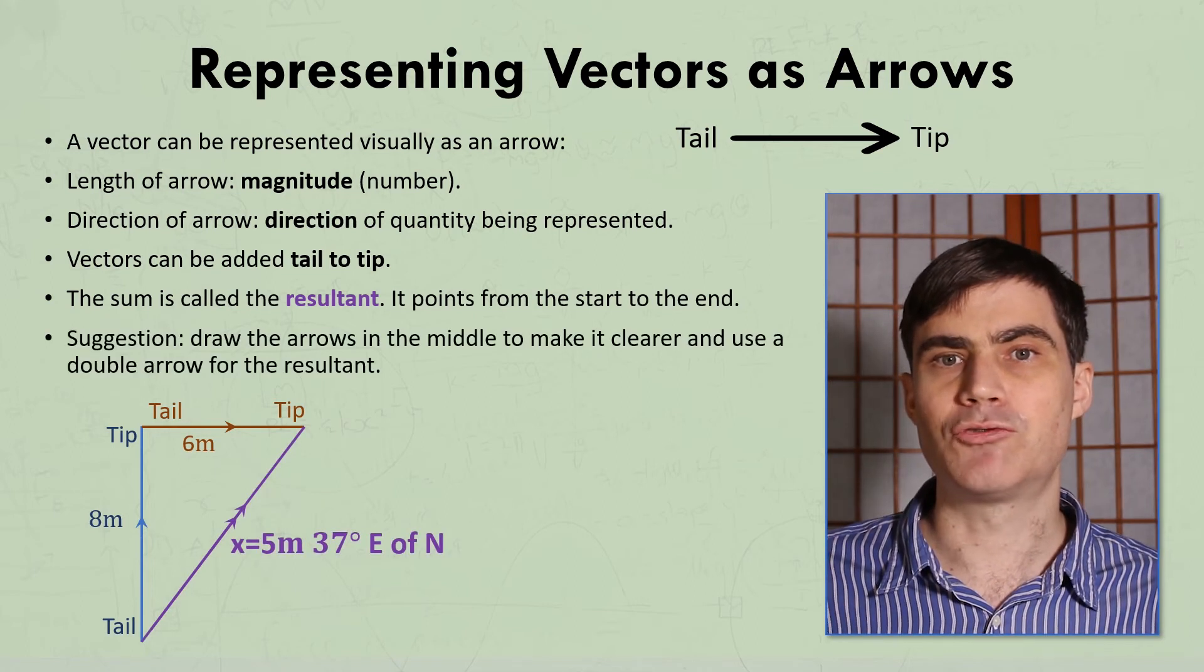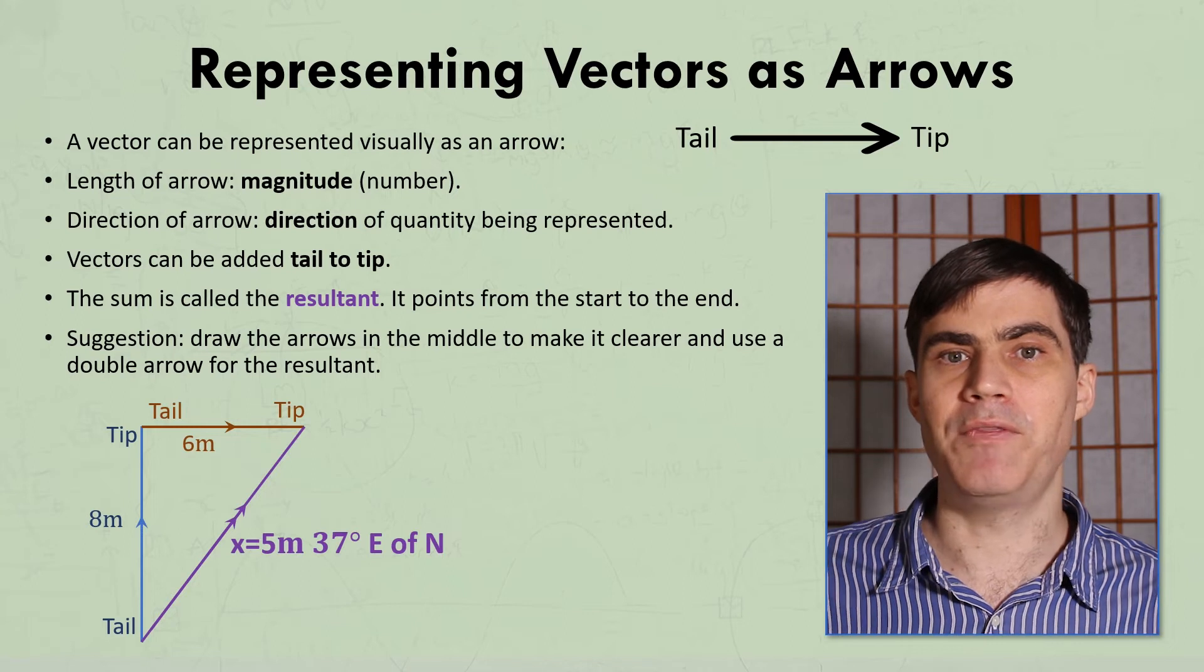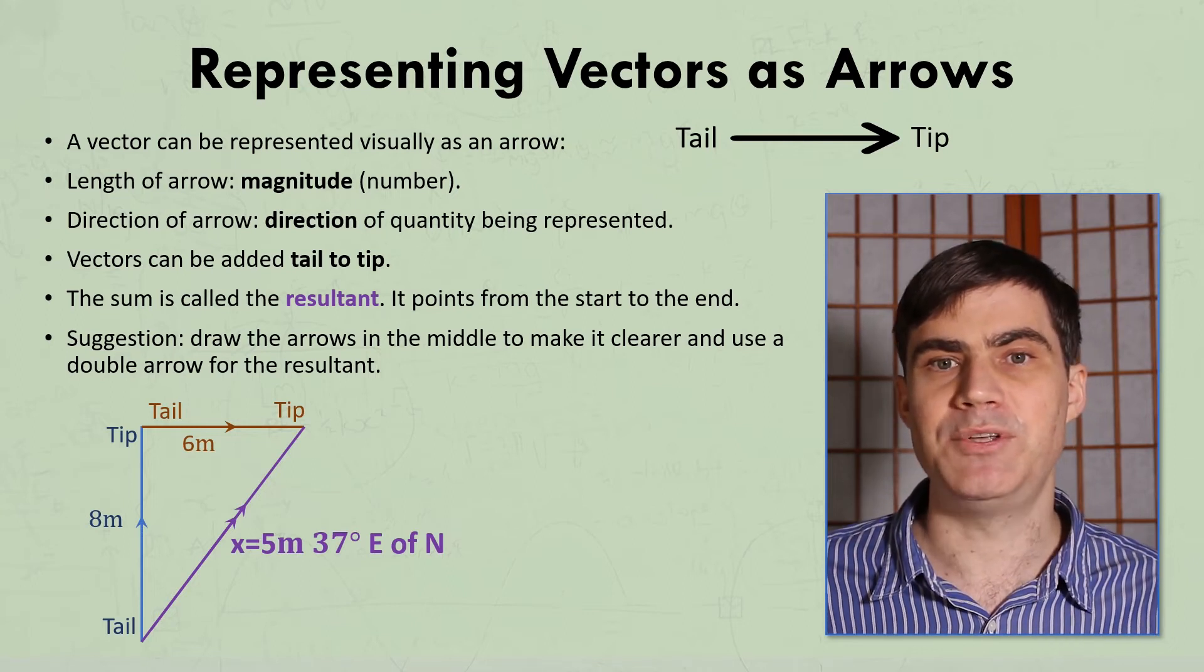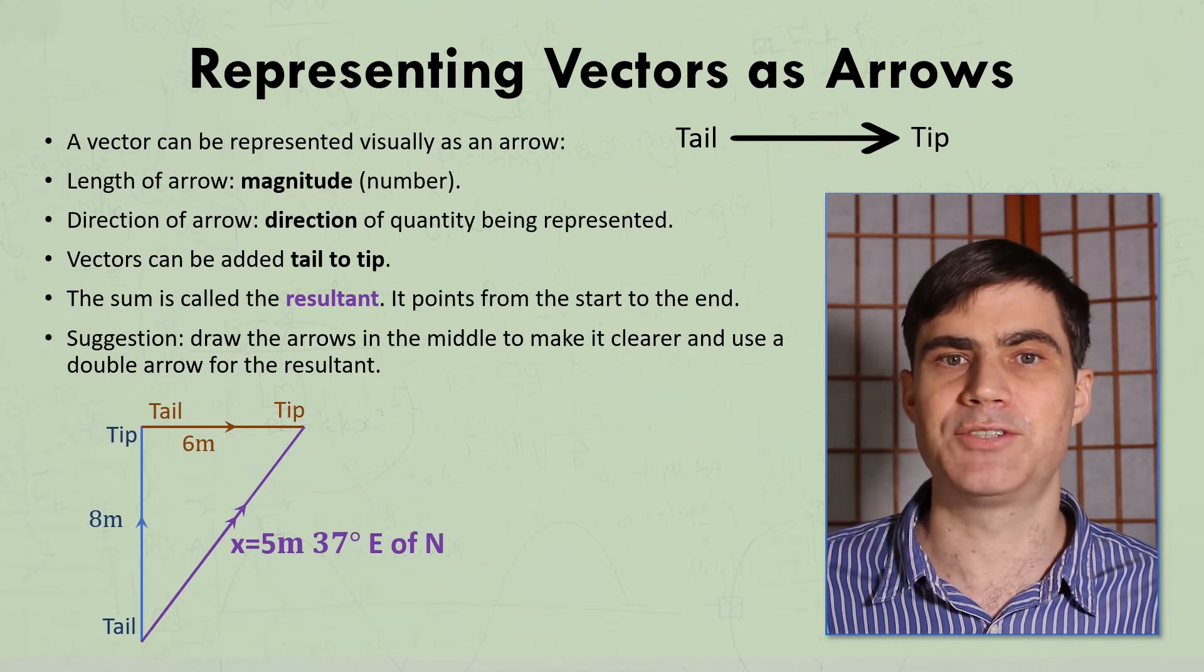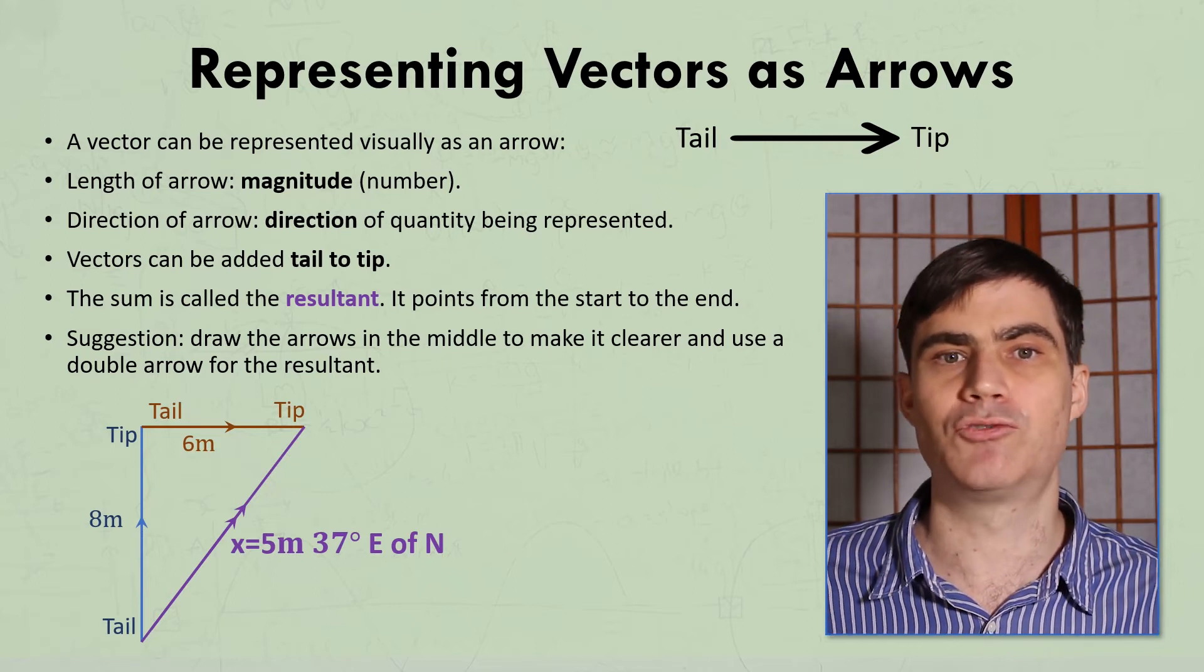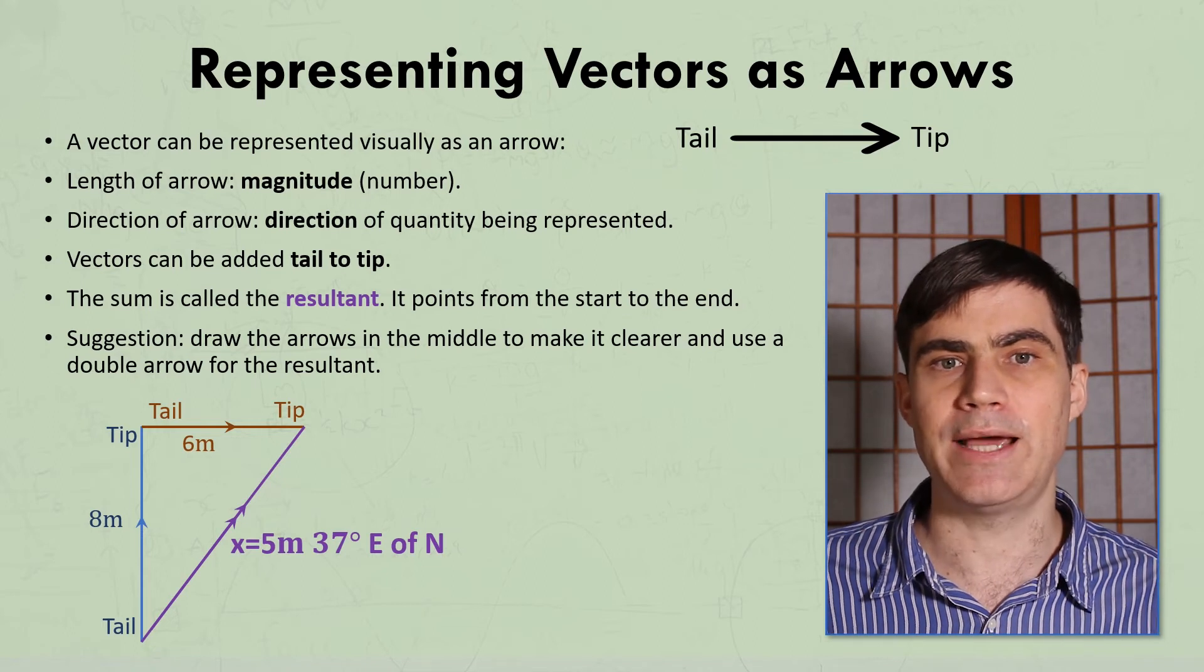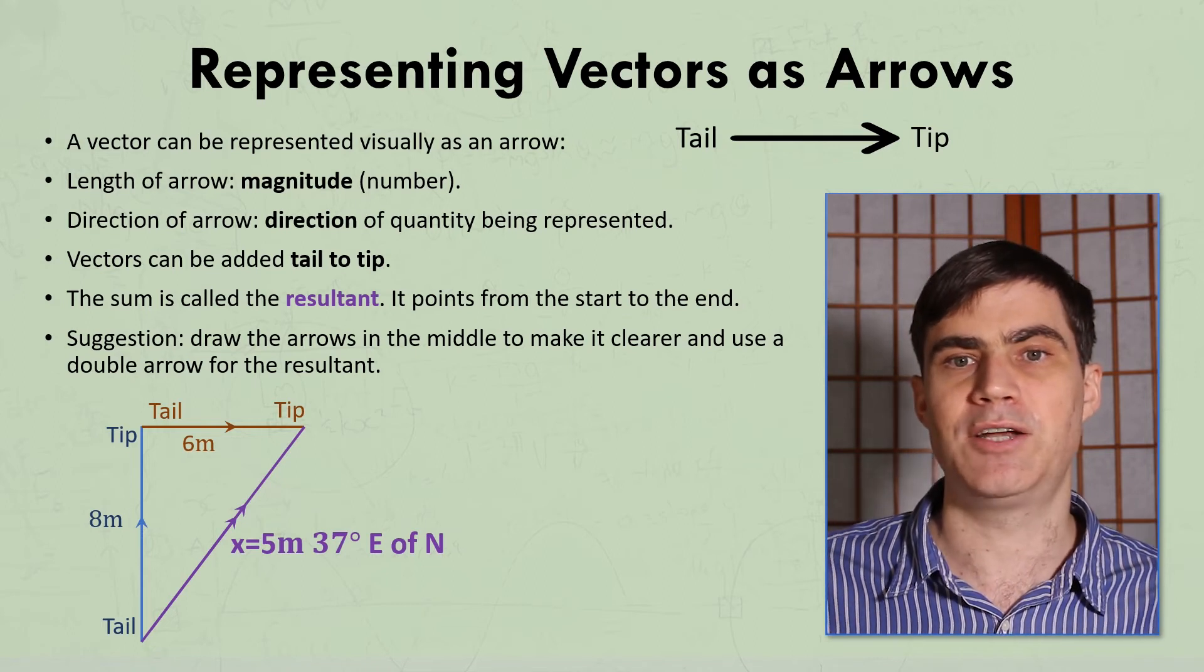I encourage my students to draw their arrows in the middle of the line rather than the end, and to use two arrows to show the resultant. But this isn't a requirement of AP Physics or any other course as far as I know, and your teacher might require you to draw them a certain way. But I find this makes it easier to check that they're drawn tail to tip, and to identify which vector is the resultant.